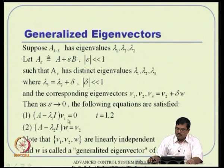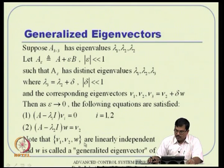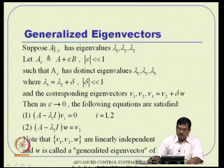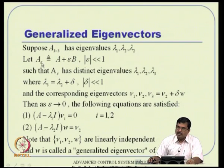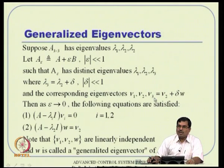The eigenvector V3 of the perturbed system can be written as V2 + delta*W, where W is the generalized eigenvector. As epsilon tends to zero, the regular eigenvector equations are satisfied, and W satisfies (A - lambda_2*I)*W = V2. So the generalized eigenvector W is close to V2 but perturbed slightly. More details can be found in the Thomas Kailath book.